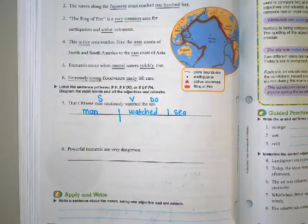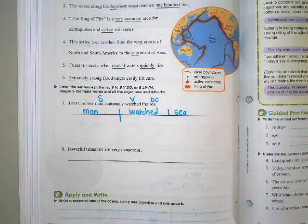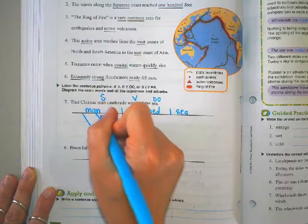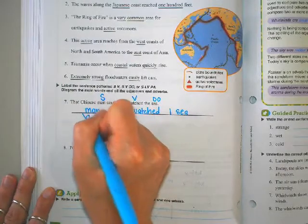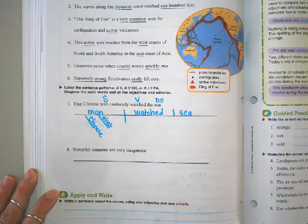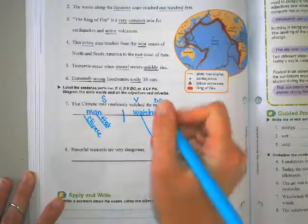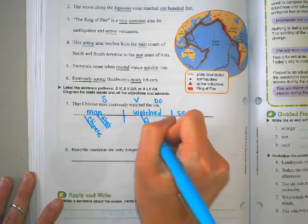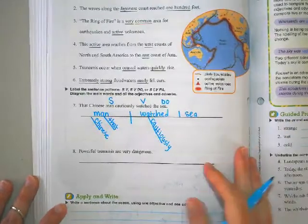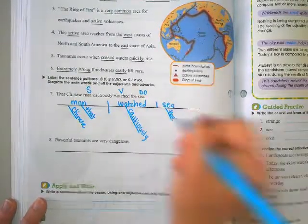All right. Now we have to go back into the sentence. Are there any words that describe the subject, the verb, and the direct object? We do have two words that describe the man. It's that and Chinese. Is there a way that he watched the sea? Yes, he watched cautiously. And we have that special adjective, the for the sea. There you go.